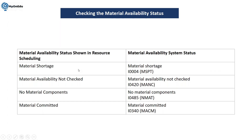As we know, when the system is checking the material availability, correspondingly it is showing you the system status in the order header. You can check this via transaction IW32 for a particular PM order.